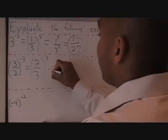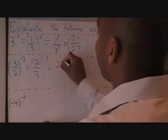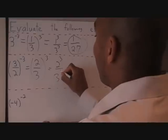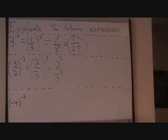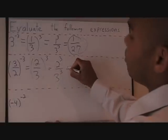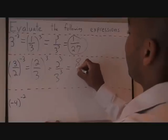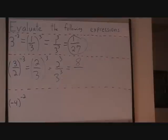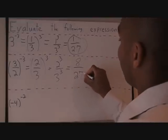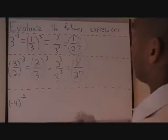This becomes 2 raised to the third over 3 raised to the third. I've distributed my exponent, and I'm left with 2 times 2 times 2, which is 8 in the numerator. On the denominator, I have 3 times 3 times 3, which is 27. And that's my final answer.